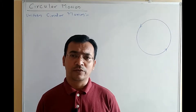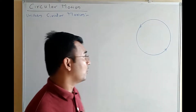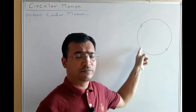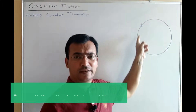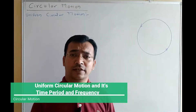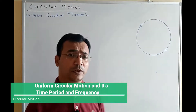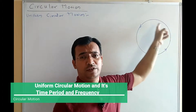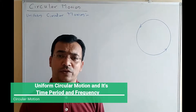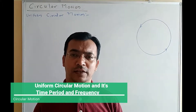Today, we will talk about uniform circular motion. What is circular motion? If the motion of a particle is along the circumference of a circle and its speed remains constant, we can say that a particle performing motion along the circumference of a circle with constant speed is called uniform circular motion, or UCM for short.